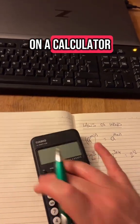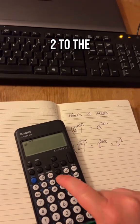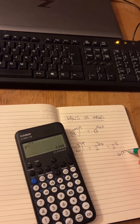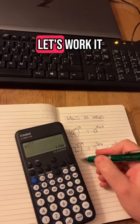I was working on a calculator. Two to the power 12 is a big number: 4096. Let's work it out with that one.